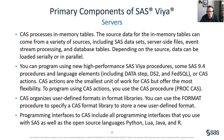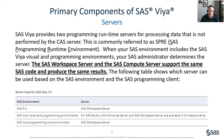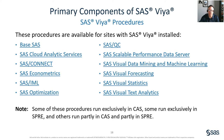SAS Viya provides two programming runtime servers for processing data that is not performed by the CAS server. This is commonly referred to as SPRE, otherwise known as the SAS Programming Runtime Environment. This is exactly similar to SAS 9.4; however, SPRE is housed within your Viya environment. When your SAS environment includes the SAS Viya visual and programming environments, your SAS administrator determines the server. The SAS workspace server and the SAS compute server support the same SAS code and produce the same results. The following categories showcase procedures that are available for sites with SAS Viya installed, many of which are brand new for SAS Viya.